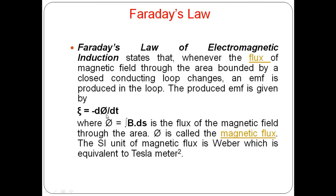Similarly, if the rate of change of magnetic flux through the closed conducting loop is less, the EMF induced in the conducting loop will be less. Also, notice the negative sign here. This negative sign has something to do with Lenz's Law, which we will explain and discuss in our next video. Phi is the magnetic flux — as we know, magnetic flux stands for the number of magnetic field lines passing through a closed volume or closed surface area.